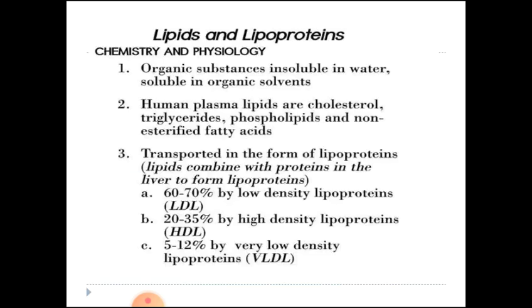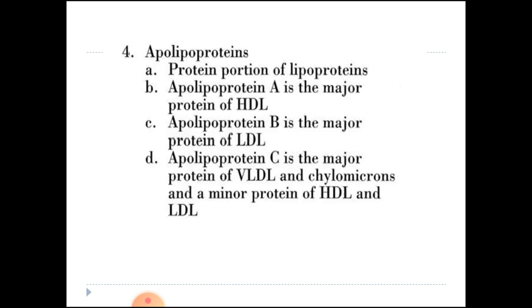All lipoproteins contain apoproteins — the protein portion of lipoproteins. Apolipoprotein A is the major protein of HDL cholesterol. These apolipoproteins are proteins that help transport lipids in the plasma. All lipoproteins can be classified by apolipoprotein type: A, B, C, and D. Each class has subclasses — for example, A1, A2, and C1, C2.